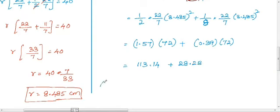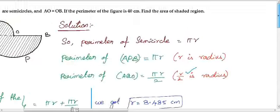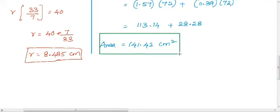We get 113.14 cm² as the area of the bigger semicircle and 28.28 cm² as the area of the smaller semicircle. Combining these, the total area of the shaded region is 141.42 cm². I hope you understand this question. Thanks for watching.